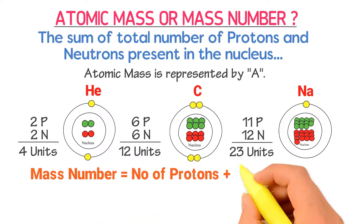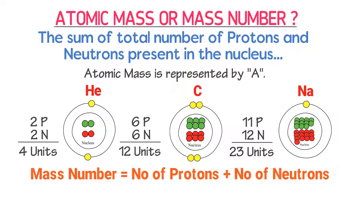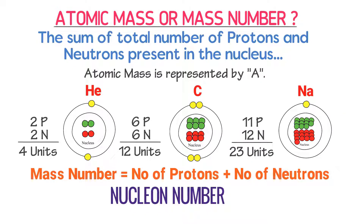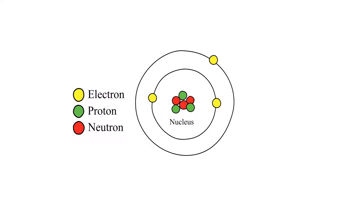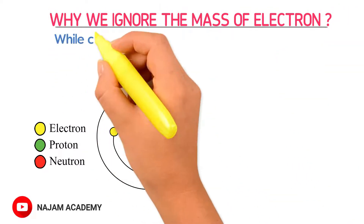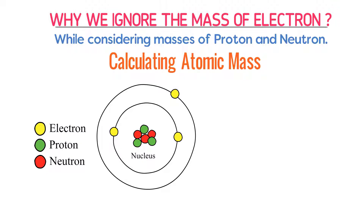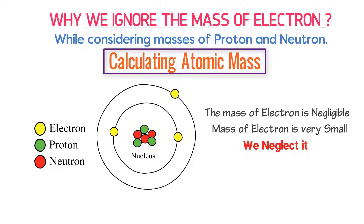Simply remember that atomic mass or mass number is equal to the number of protons plus the number of neutrons. Also remember that atomic mass or mass number is sometimes called nucleon number, because protons and neutrons are present in the nucleus. Now, why do we ignore the mass of electrons and only consider the masses of protons and neutrons when calculating atomic mass? It is because the mass of an electron is negligible — so small that we neglect it when calculating atomic mass or mass number.